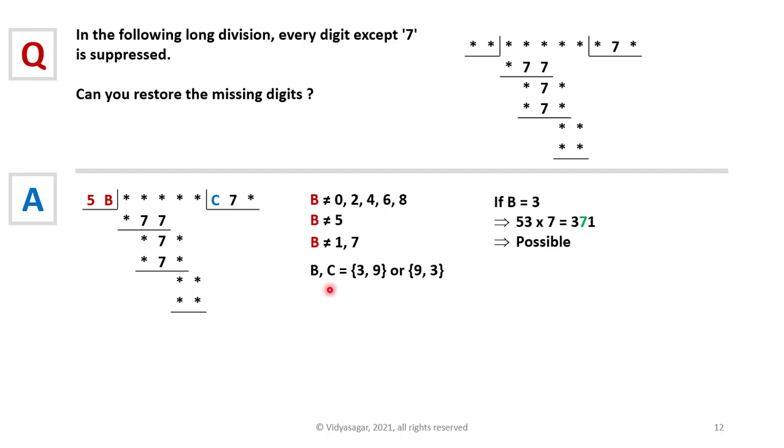So let's take B as 3. So 53 times 7 equals 371, and middle digit is 7. If B is 9, we are not getting 7 in the middle digit. This implies B is 3 and C is 9. Let's substitute these in the problem.